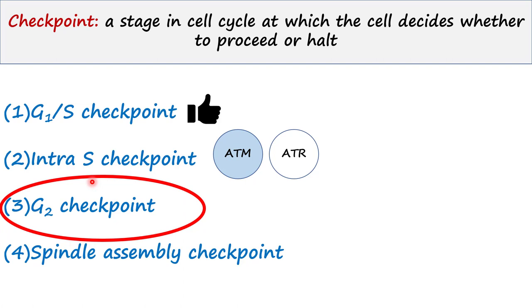This checkpoint acts on the transition from G2 to M phase. Hence, it is also called G2M checkpoint. It checks whether the cell is supposed to move on and enter M phase. The complex of cyclin B and CDK1 is responsible for proceeding into M phase. If there is no DNA damage, cyclin B and CDK1 bind to each other.